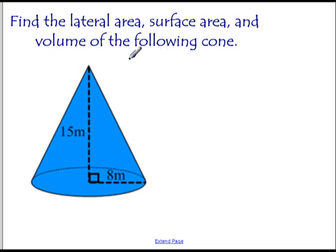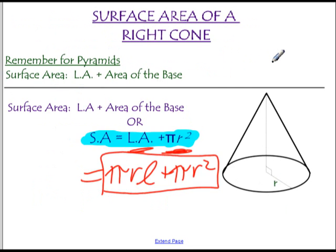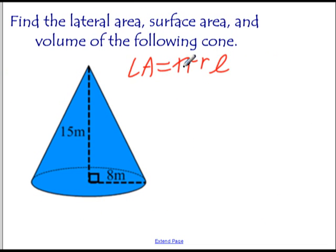So here we go. So the lateral area we said was, and you've got this in your notes, but it's π times the radius times the slant height, πrl. Great, if you missed that, there it is, πrl. So lateral area is πrl, so let's just plug in what we've got. We've got π times the radius, which is 8 meters, times the slant height, which is, uh-oh, where's the slant height? Well, there it is, but we don't know what it is.